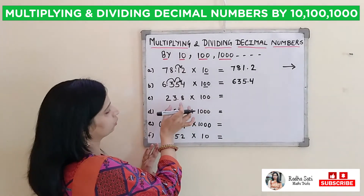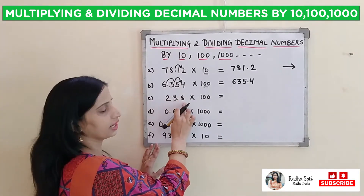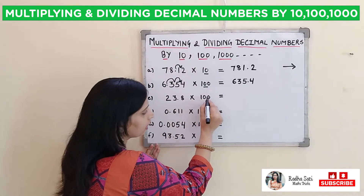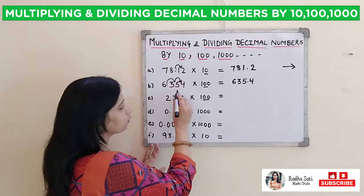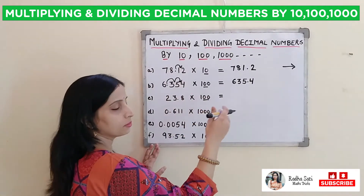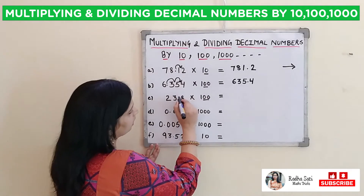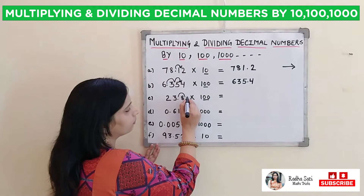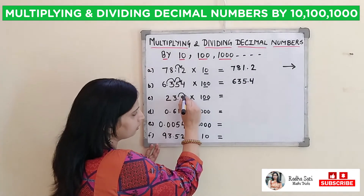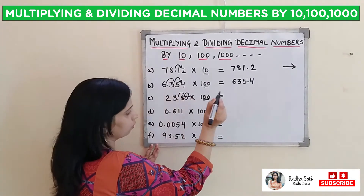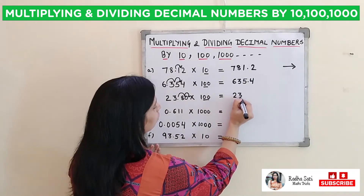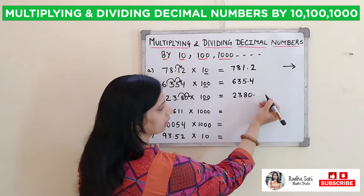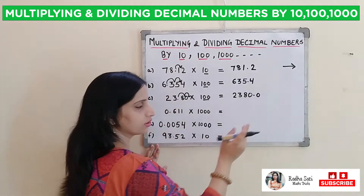The third one is 23.8 multiplied by 100. Again, in 100 there are 2 zeros, so our decimal will shift to the right hand side by 2 places. One place is after 8, and there is no second place, so we will put one zero. The decimal will move to after the zero, and our answer will be 2380. You can put a decimal here and after the decimal put zero — it won't make any difference.